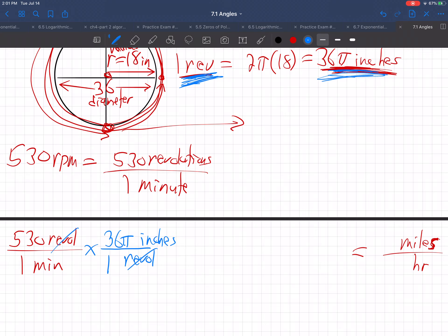We found one revolution is 36 pi inches. So this fraction is just a fancy one. Because 36 pi inches is equal to one revolution. So I'm really multiplying by a fancy one. When you multiply by a fancy one where the top and the bottom are really equal, you're not changing the value. You're just changing the units. So revolutions is gone. If I stop the problem right now, I'm in inches per minute.